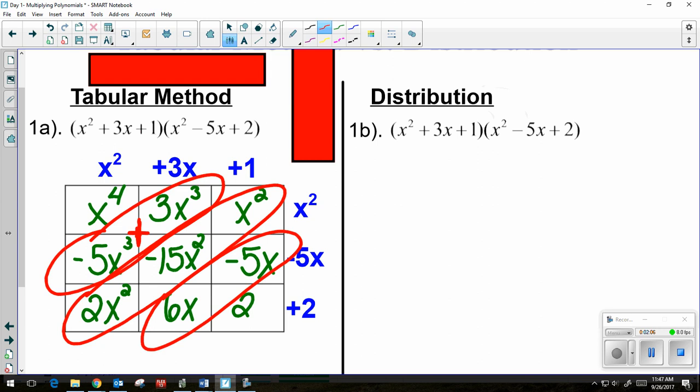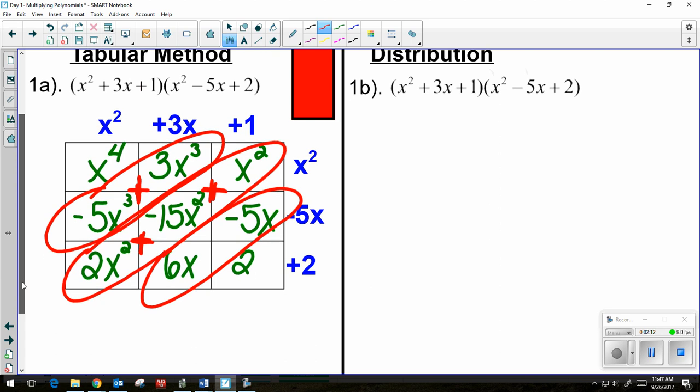There's your help. This is a plus sign. So I'm adding my like terms. My x to the fourth has nothing to be combined with. I have a negative 5x cubed and a positive 3x cubed. So I have minus 2x cubed.